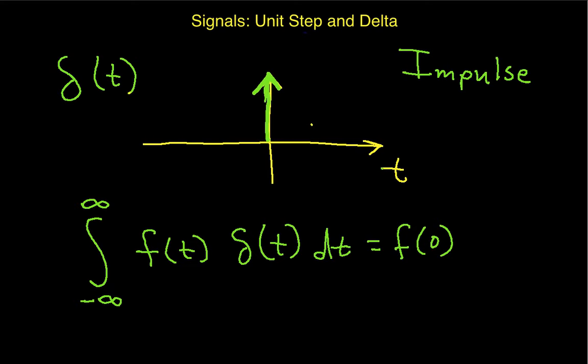But it turns out that that's actually quite a useful thing to be able to do, and it motivates the convolution integral, and it motivates the idea of an impulse response. It actually motivates all the useful things that the delta function does for us.